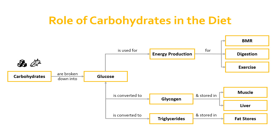It's possible, therefore, that if you consume sufficient carbohydrates — more than you need for energy production, more than needed to top up muscle and liver glycogen stores, with still more left over — that excess will be converted into triglycerides and stored in your fat stores. You can actually increase your fat stores through overconsumption of carbohydrates.